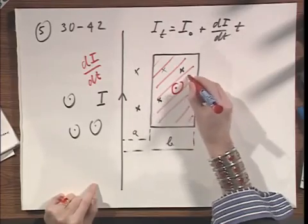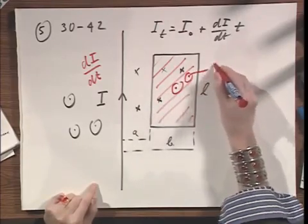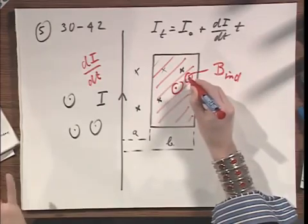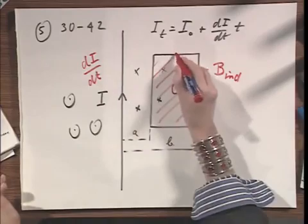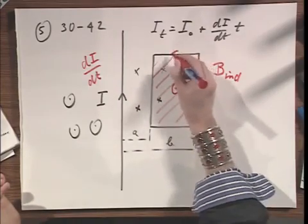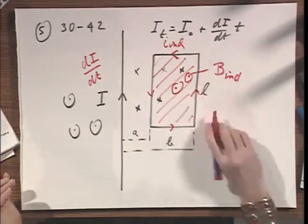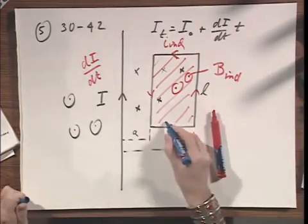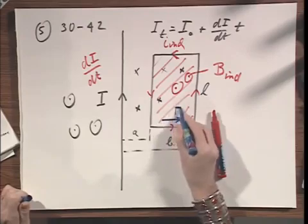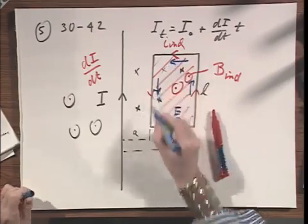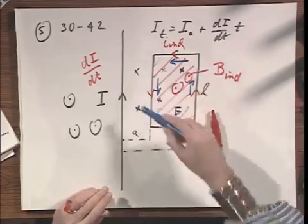It creates a B induced in this direction. How can you get a B induced in this direction? It's only possible if you have an I induced in this loop in this direction. Therefore, electric fields in the wires that contain resistance in this direction.